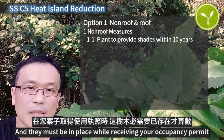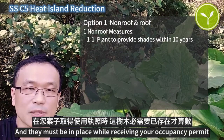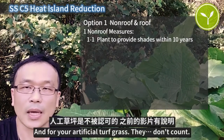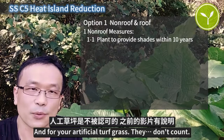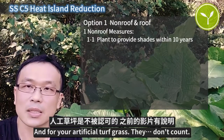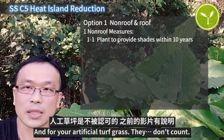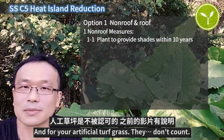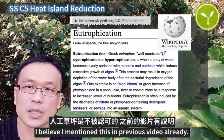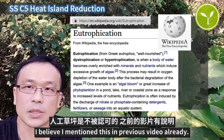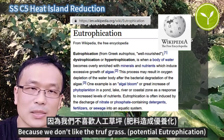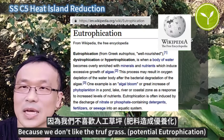The plants must be in place while receiving your occupancy permit. For artificial turf or grass, they don't count. I believe I mentioned this in a previous video already, because we don't like artificial turf grass.